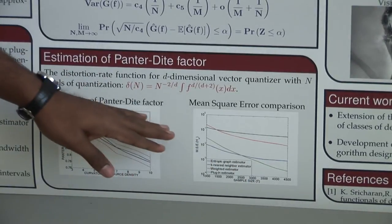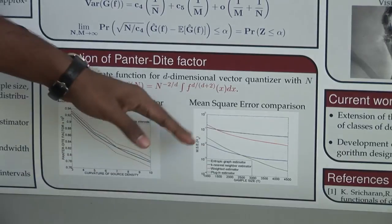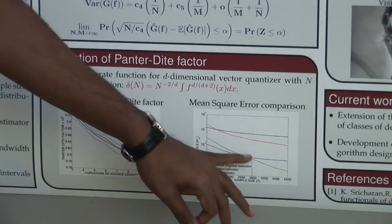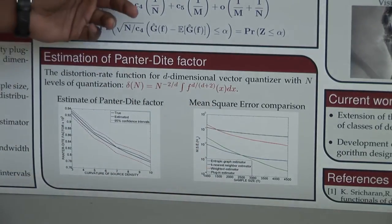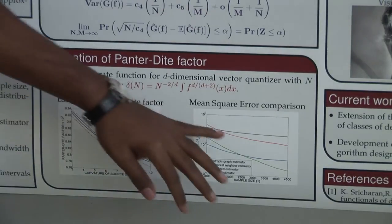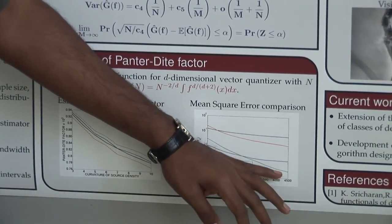The right panel compares the mean squared error of my estimator to other estimators in the literature. I show that if you optimize the mean squared error over the three parameters K, M, and N, then my mean squared error performance is superior to the performance of other estimators in the literature.